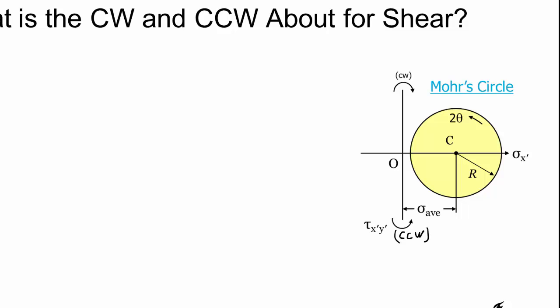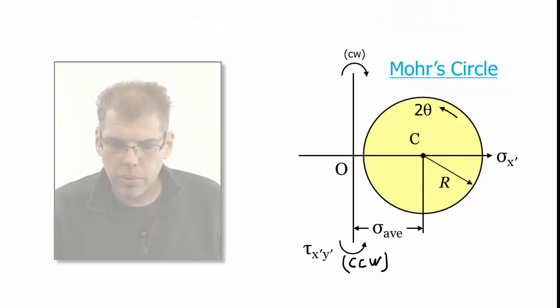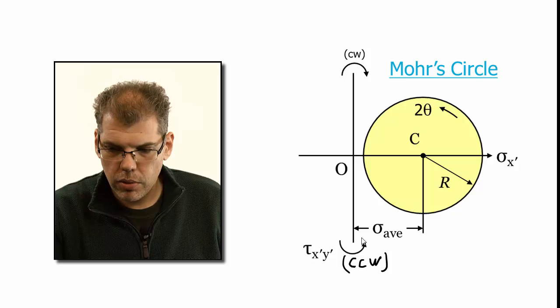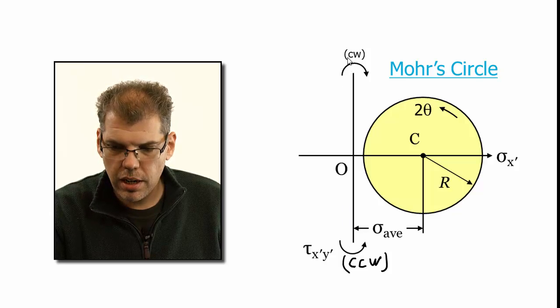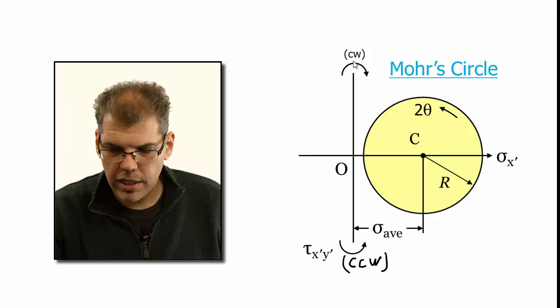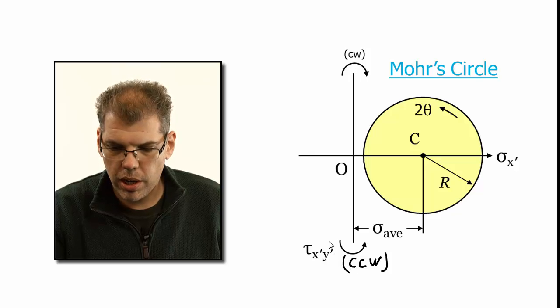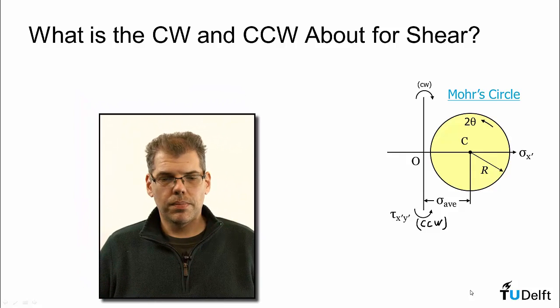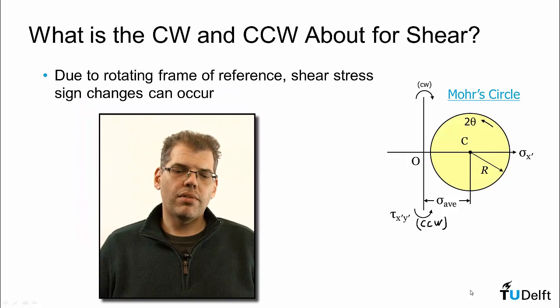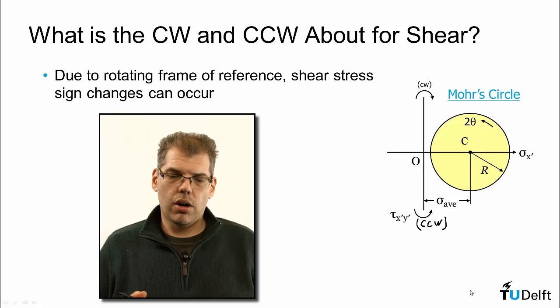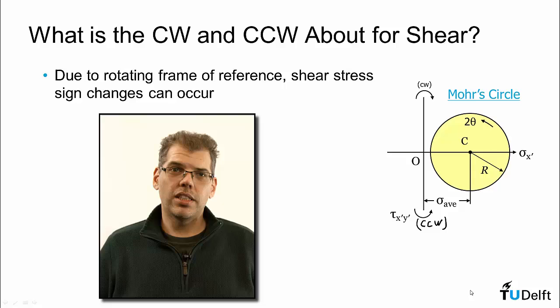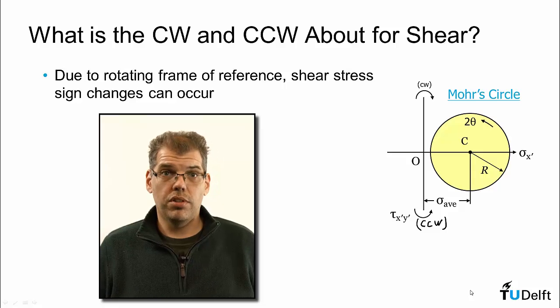Now in our previous illustration of the Mohr's circle, you may have noticed that for our shear stress, we don't have a positive or negative. We have indicated CW for clockwise and CCW for counterclockwise, sort of indicating a type of rotation. Now why are we doing this? Well, it's because we have a rotating frame of reference in our Mohr's circle, and this rotating frame of reference can cause a flip in the sign of the shear stress.